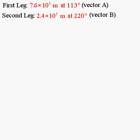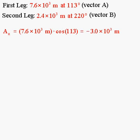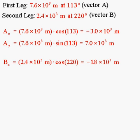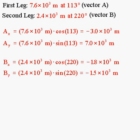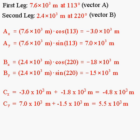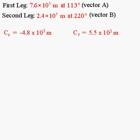We split vector A into components: the X component is the magnitude times cosine of the angle, and the Y component is the magnitude times sine of the angle. We do the same for vector B. Then we add the components directly. The X component of the final vector C is −3.0 × 10³ meters plus −1.8 × 10³ meters, equaling −4.8 × 10³ meters. The Y component is 7.0 × 10³ meters plus −1.5 × 10³ meters, equaling 5.5 × 10³ meters.